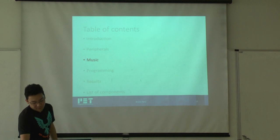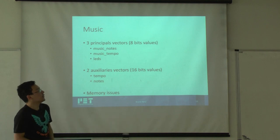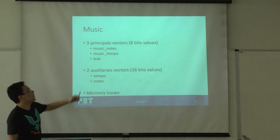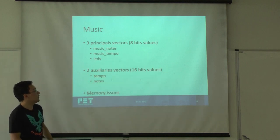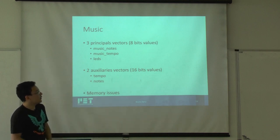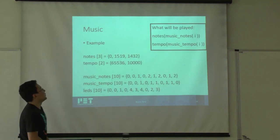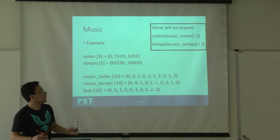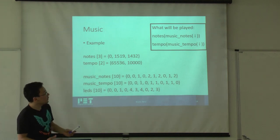Now how I build the music. To build the music, I had some memory issues. I have to save some memory because otherwise the music will be very short. So I build the music with five vectors: three principal vectors that are the music notes, the music tempo, and the LEDs, which are vectors of eight-bit values. And I also built two auxiliary vectors of 16-bit values, the vector of tempo and vector of the notes. I'll explain this better here. I built the notes vector with all the different notes that are in the music. In the tempo, all different tempos that we have in the music.